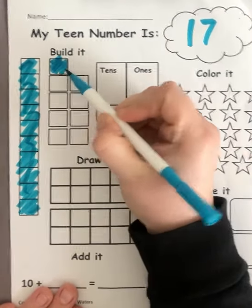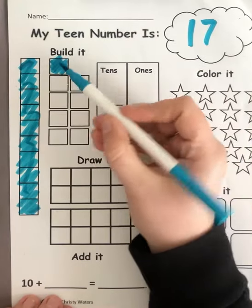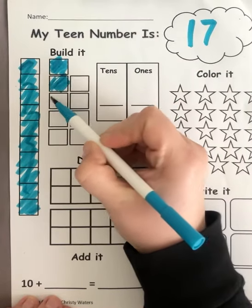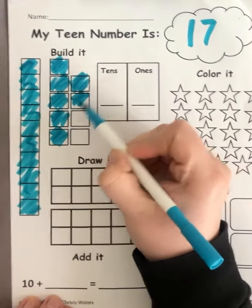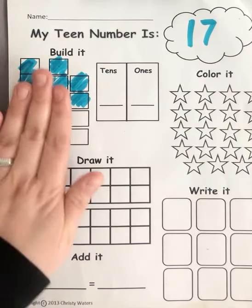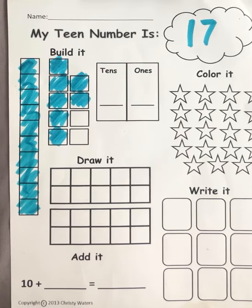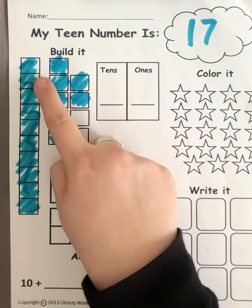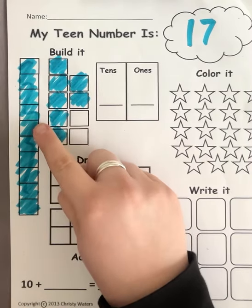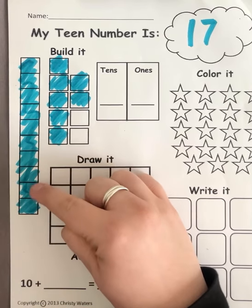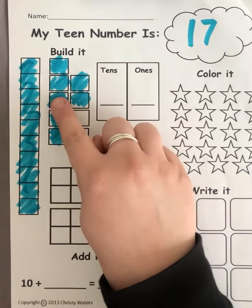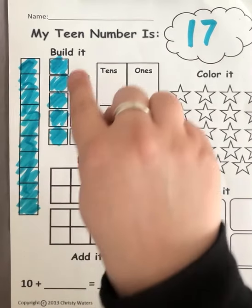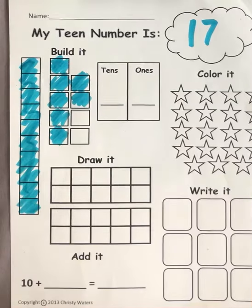So that's how I know I'm gonna color in seven of these squares. One, two, three, four, five, six, seven. Now let's count to see if we have 17. One, two, three, four, five, six, seven, eight, nine, 10, 11, 12, 13, 14, 15, 16, 17. I'm absolutely right, which is awesome!